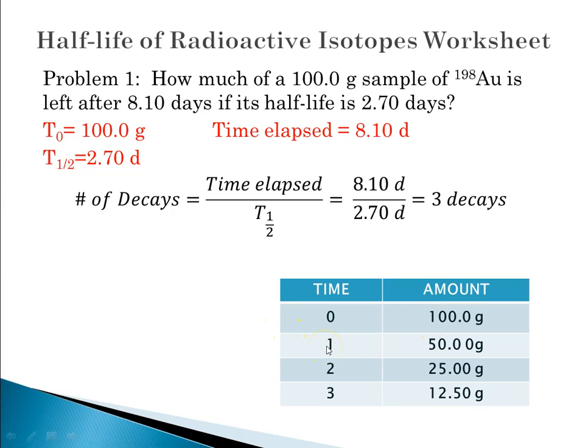So after one decay, there would be 100 divided by 2, 50 grams. After another decay takes place, we would divide by 2 again, we'd have 25 grams. And after another decay takes place, we should have 12.50 grams left. So 12.5 grams is left.